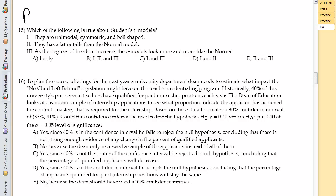All right, here we go with part four. Which of the following is true about this student's T models? They are unimodal, symmetric, and bell-shaped. Yes, because it's very much like the normal model.